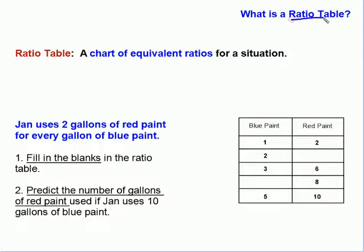A ratio table is just a chart, that's all it is. It's really just a chart of equivalent ratios for a situation. So if I was going to make a ratio table for the number of miles I ran, if I ran 1 mile in 7 minutes,